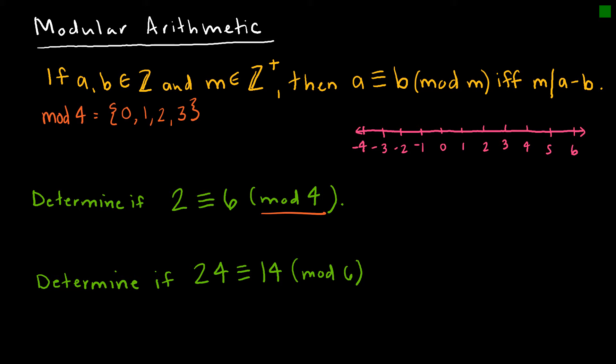Looking at mod 4 on a number line, we have 0, 1, 2, 3 as we normally would. But with mod 4, the value 4 divided by 4 has a remainder of 0, and 5 divided by 4 has a remainder of 1, and 6 divided by 4 has a remainder of 2. Going in the opposite direction, negative 1 would have a remainder of 3. So the pattern is just 0, 1, 2, 3 repeating.